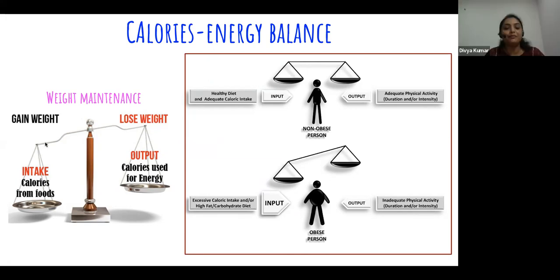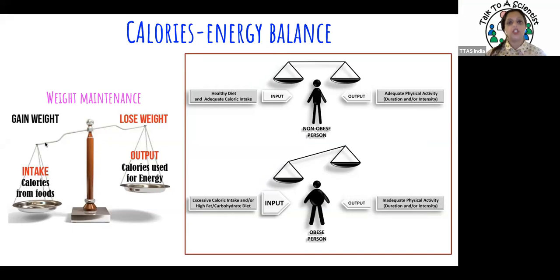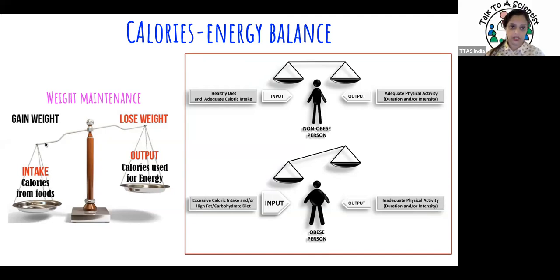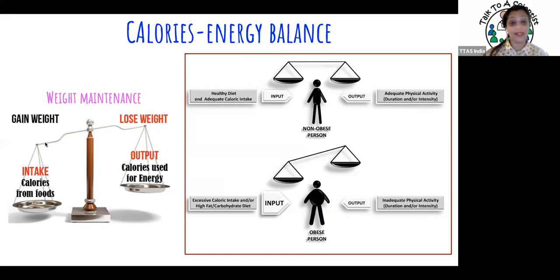We always need to have a balance - metabolic balance is very critical. Too much input and not enough output causes weight gain; too much output and not enough input leads to being underweight. There are challenges to this in our new lifestyle - two years of lockdown, no sports, and now summer vacation. We planned this session with all of this in mind.